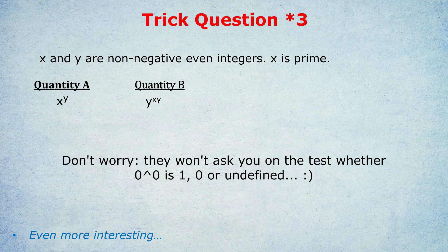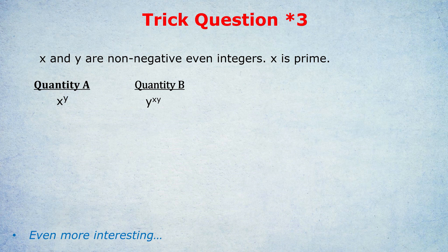Meaning the answer is actually D, because of that one exception of zero being a non-negative even integer. Pat yourself on the back if you saw through all three tricks. And if this video gets enough response, feedback, likes, and comments, I will definitely consider doing more trick questions in the future.